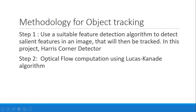Now that we've looked at the challenges, we understand the need to address them, and therefore the need for a robust and efficient object tracking algorithm. In this project I'm going to explore one such technique. The algorithm involves two primary steps: first, a suitable feature detection algorithm to extract and detect interesting features in an image, and second, the Lucas-Kanade algorithm for computing optical flow to track the interest point.